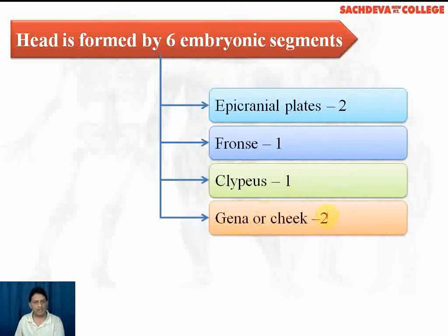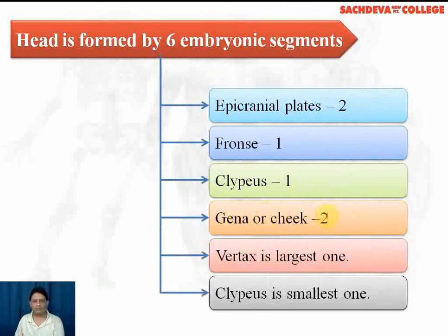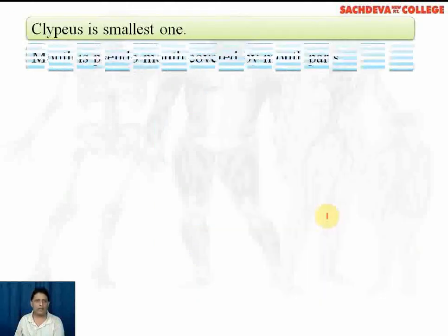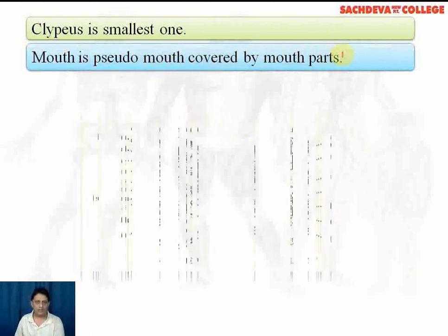In the adult condition, all six segments fuse to form a single segment, and the vertex is the largest part, being a part of the apicranial plates. The mouth is a pseudo-mouth covered by mouth parts, which can be seen in dorsal and ventral view.